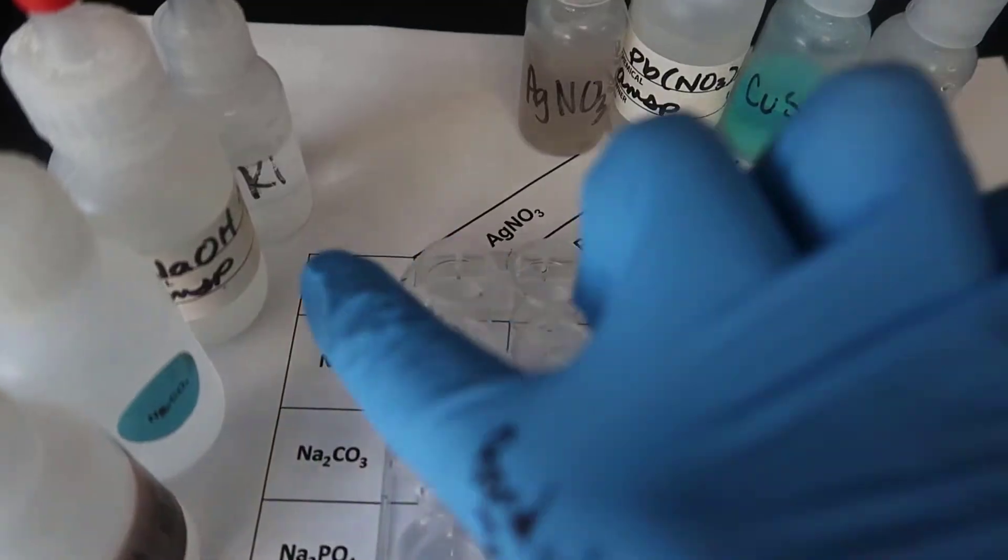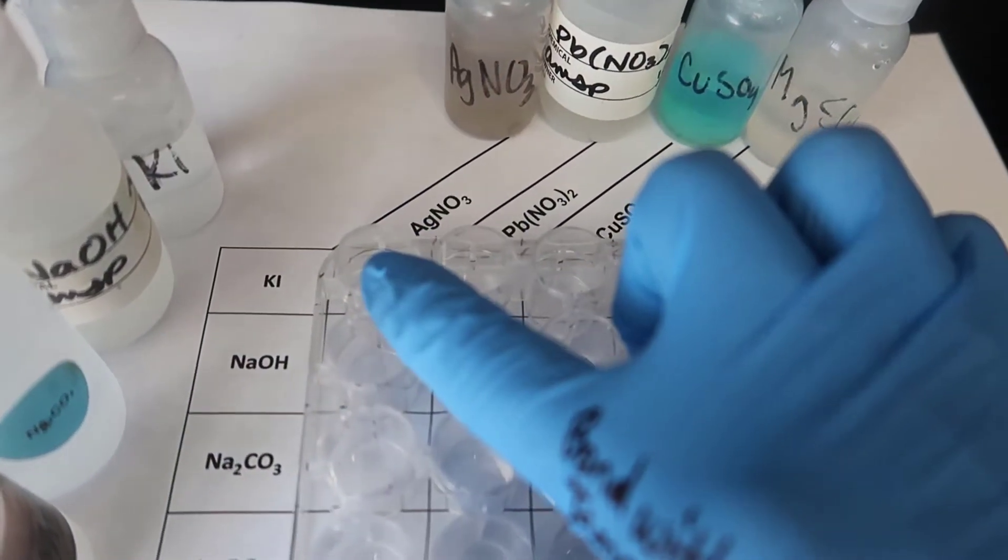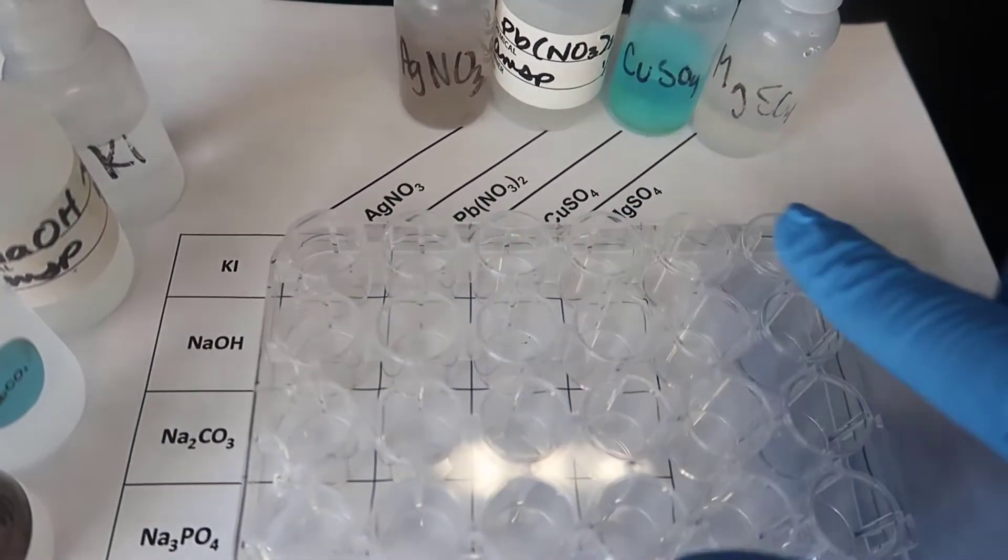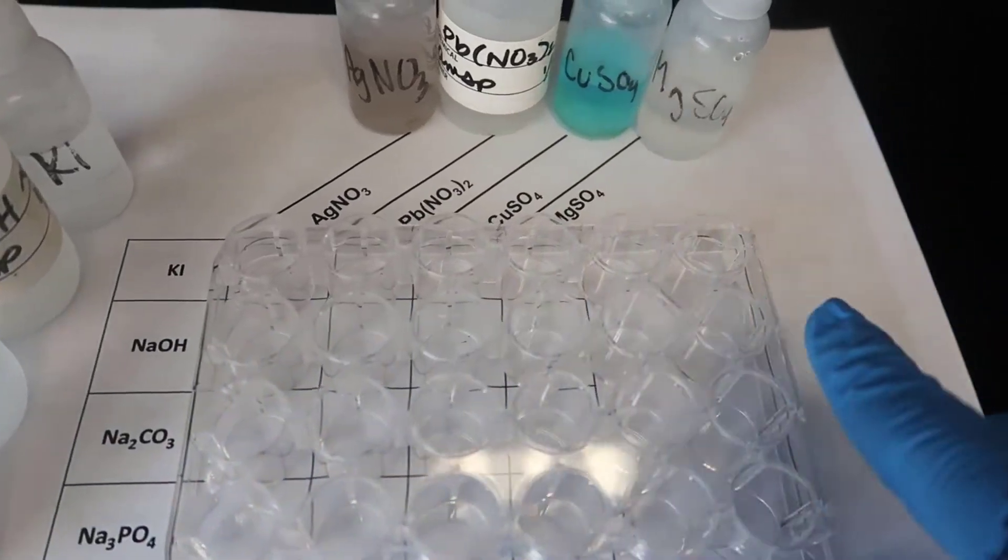So, for example, I am going to take two drops of KI, place it right here, two drops of KI all the way across, two drops of NaOH all the way across.